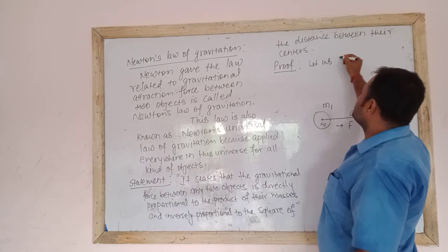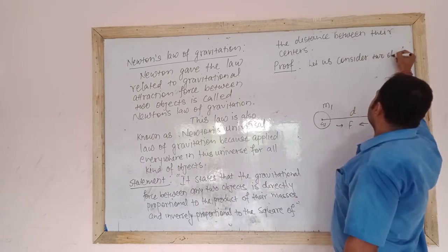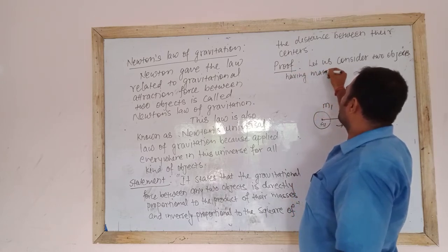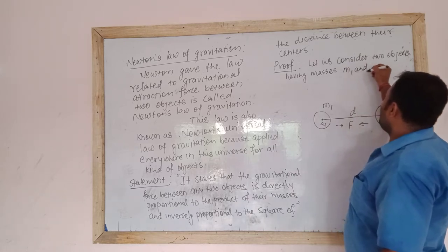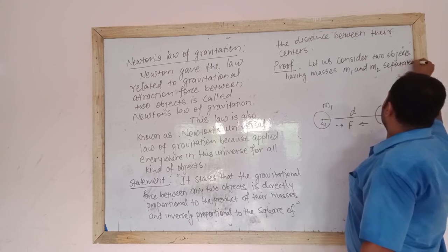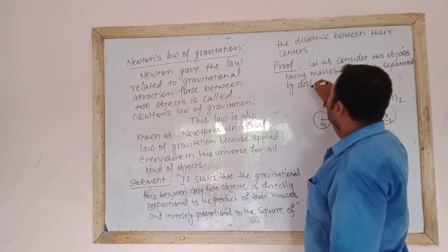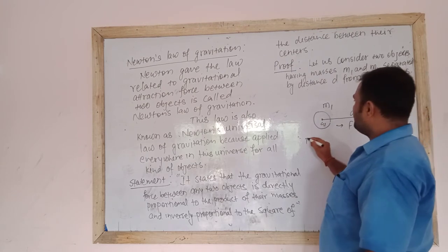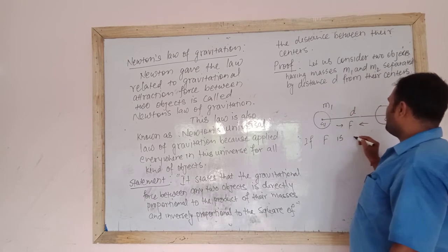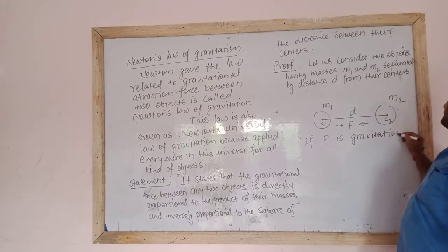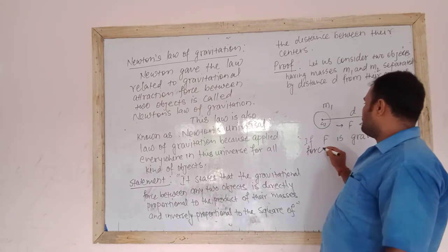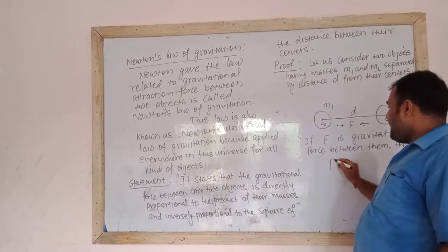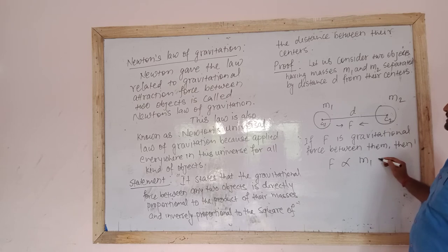Let us consider two objects having masses M1 and M2, separated by distance D from their centers. If gravitational force is F, then according to the statement, F is directly proportional to M1 multiplied by M2.